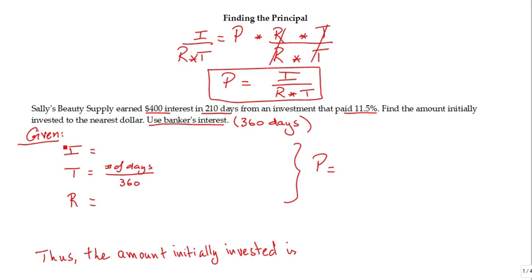So what's given? We know that the interest earned is $400. And the time, we know the time is equal to the number of days divided by 360 because we're using the banker's interest. And we have 210 days divided by 360, and that's t, that's the time. We leave it that way.